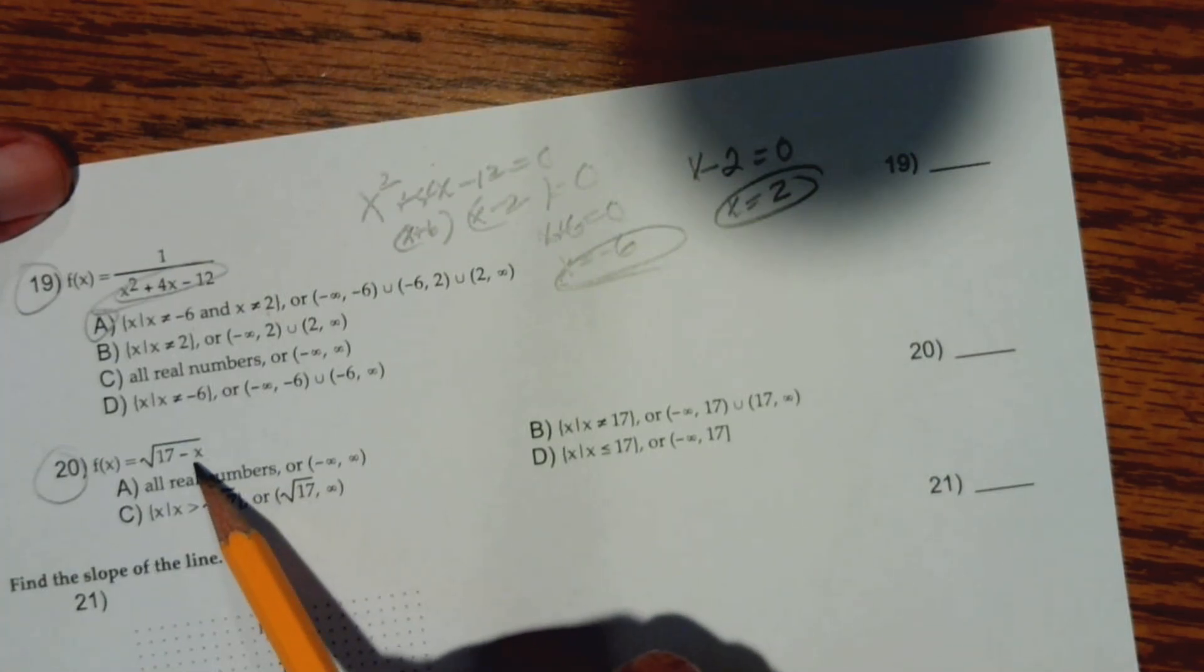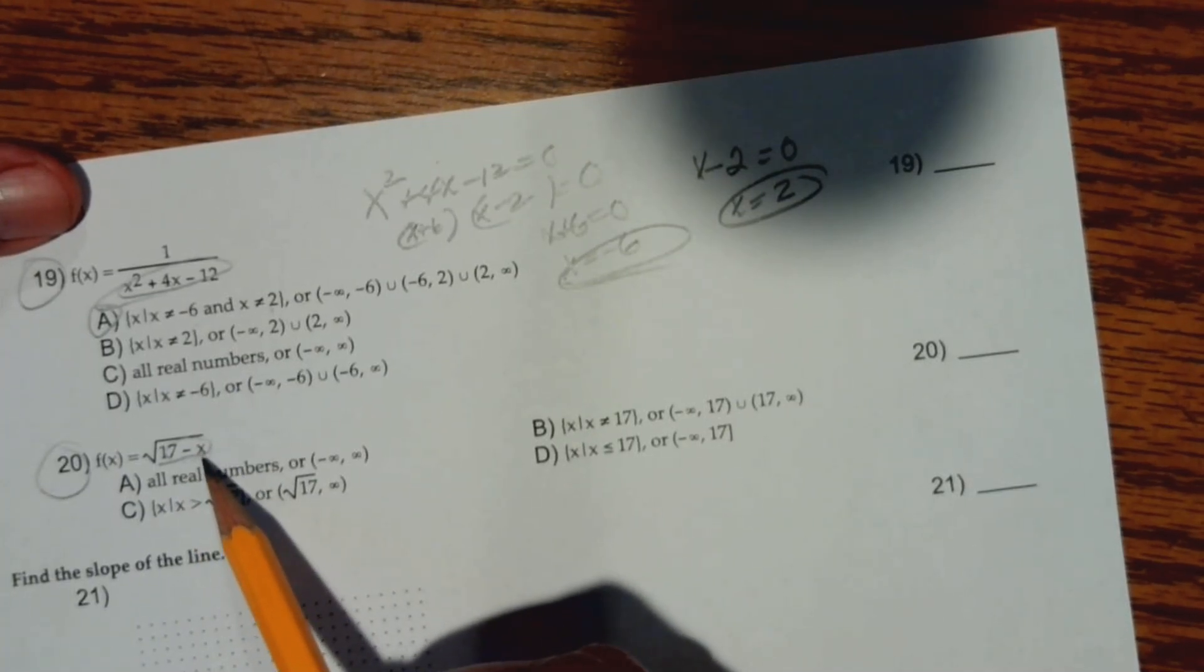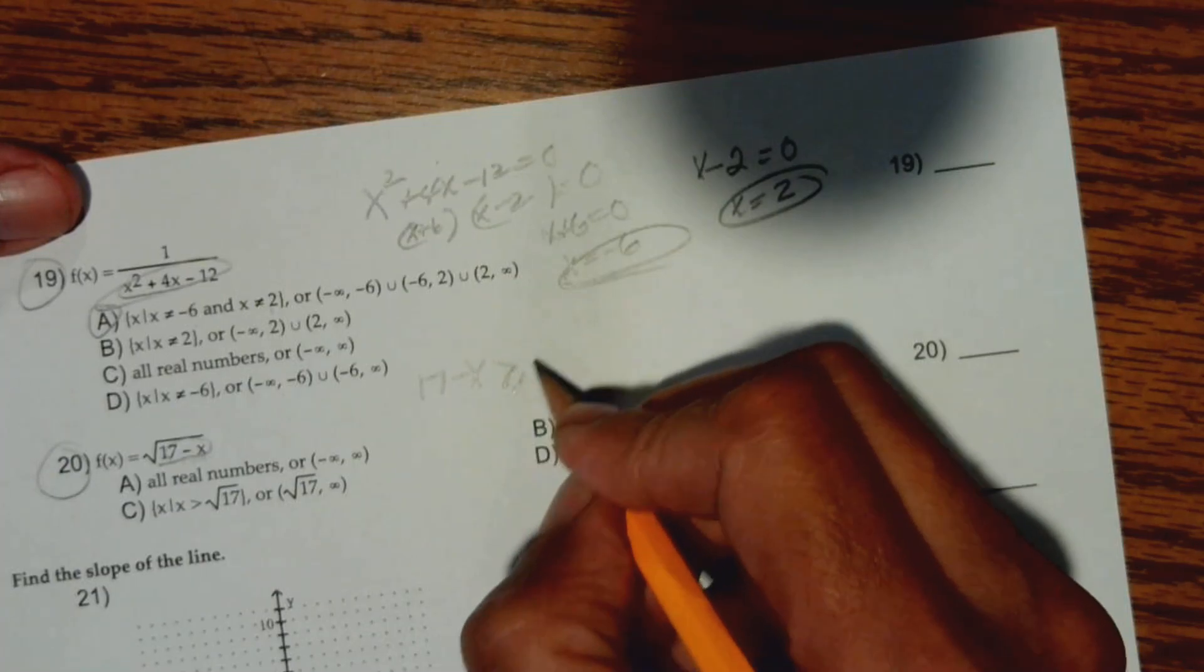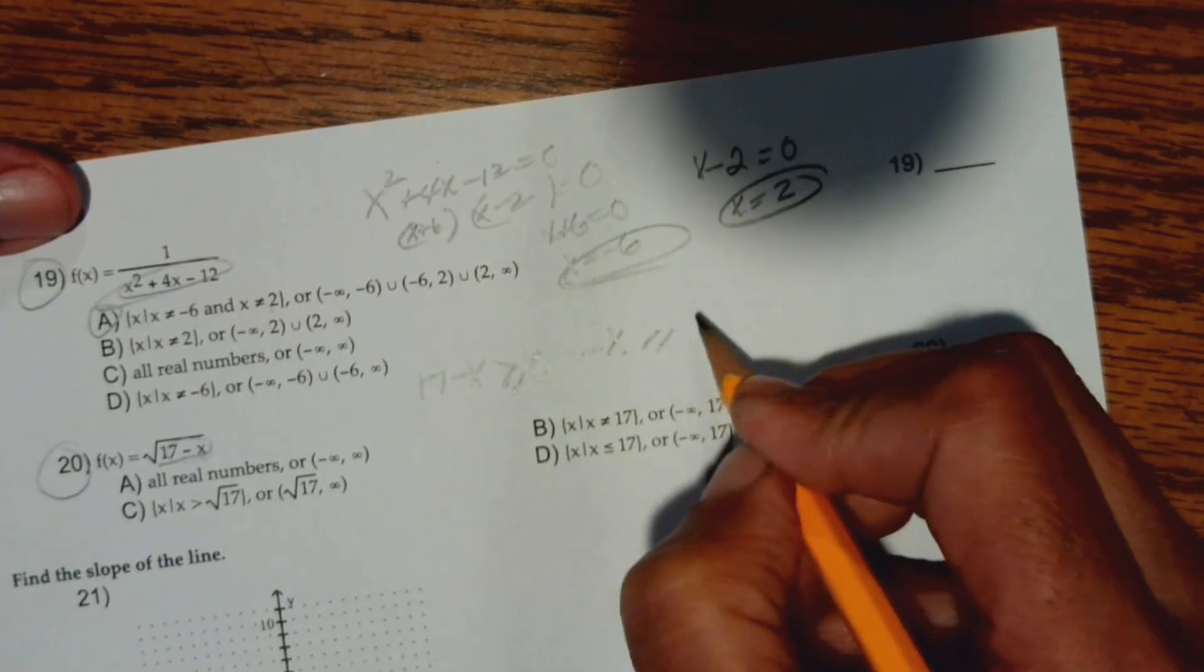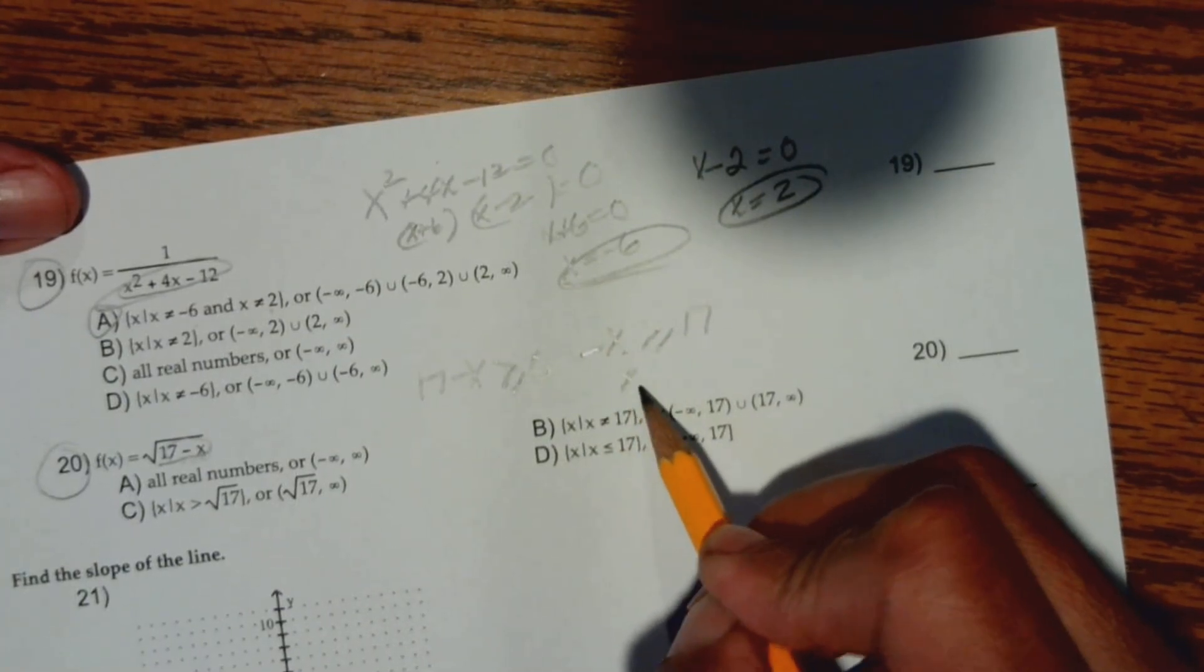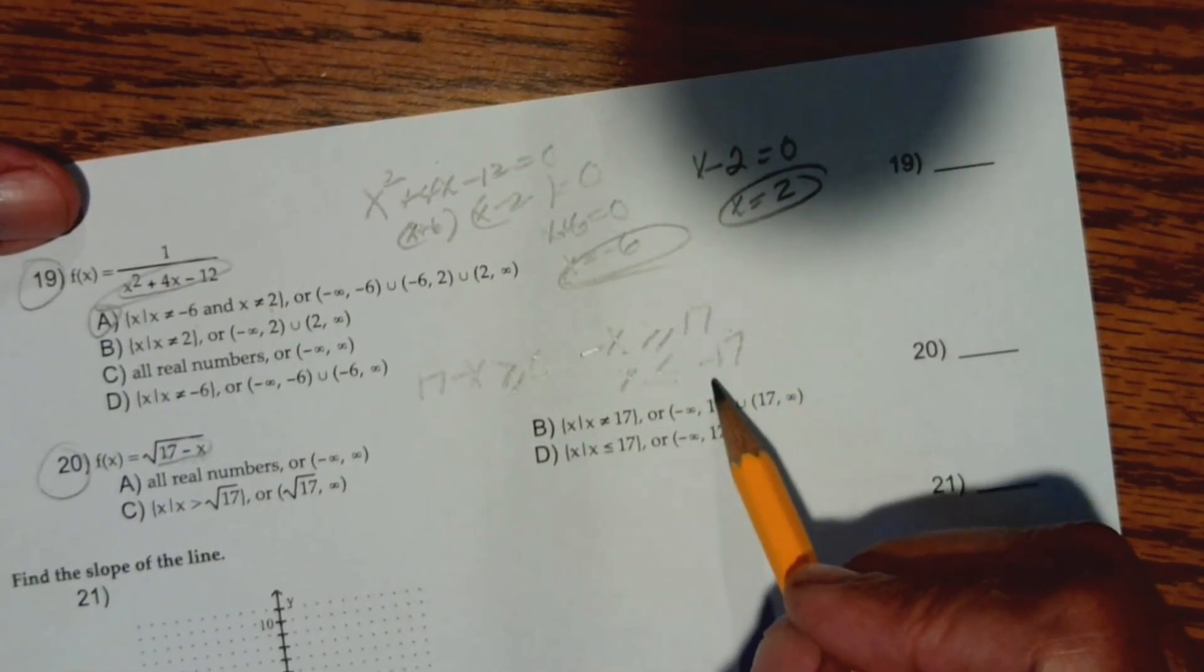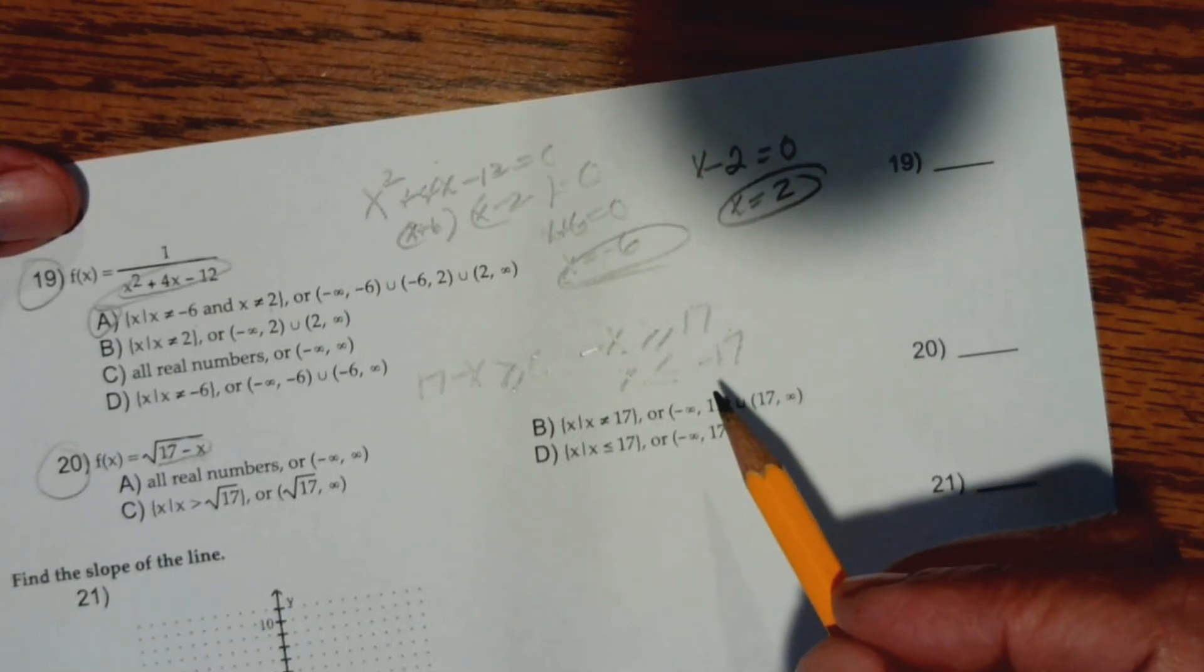And once again here, number 21, this radicand, this value here has to be greater than or equal to 0. So 17 - x has to be greater than or equal to 0. So negative x has to be greater than or equal to negative 17. Now, when I multiply through by a negative, it changes the direction of the inequality. So what we're saying here is that x has to be less than or equal to negative 17. What number are we on here? Number 20.